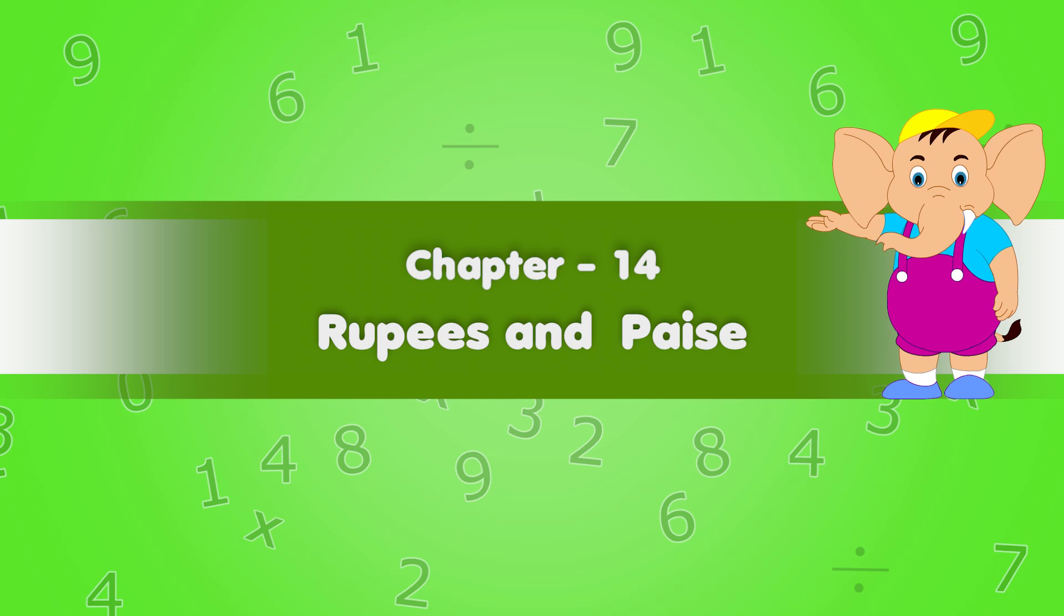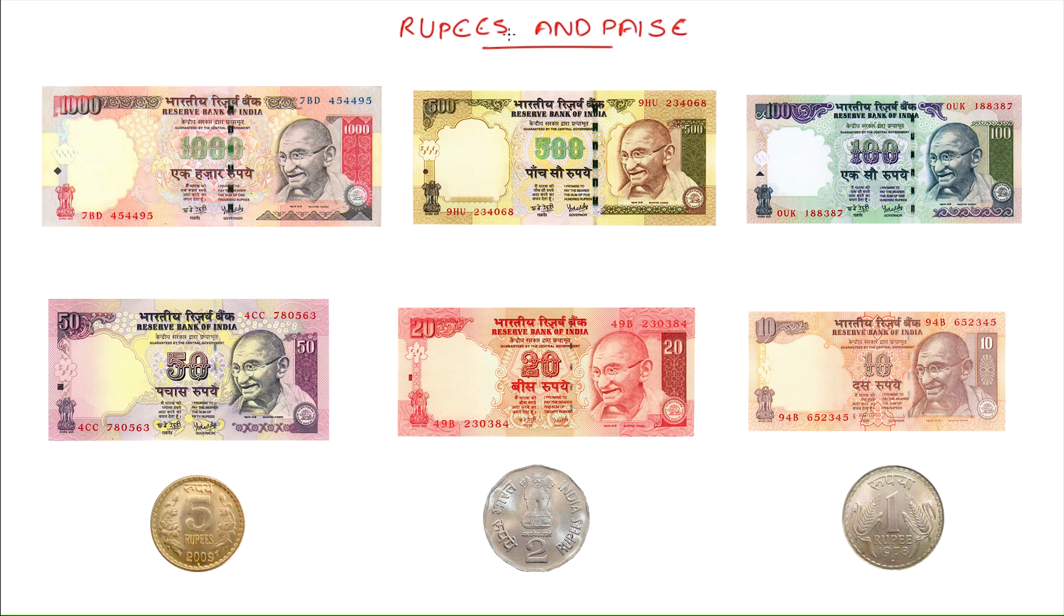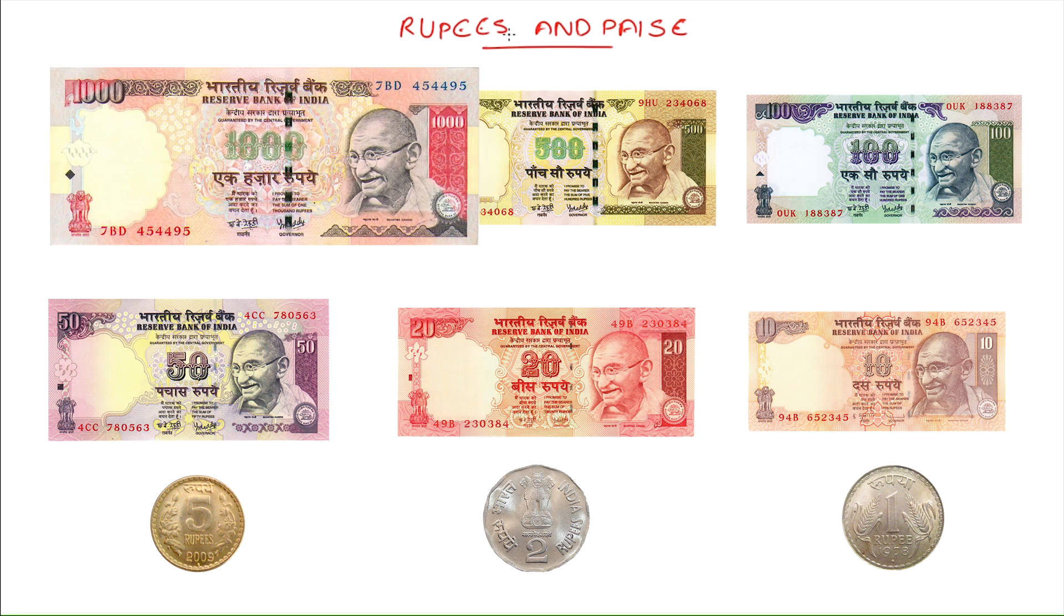Chapter 14, Rupees and Paisa. Here are a bunch of different rupee notes and coins we have. Here is a 1000 rupee note.